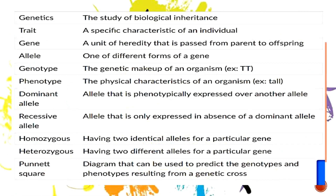Let's unlock some key terms about our topic. Genetics is the study of biological inheritance. Traits are specific characteristics of an individual. Genes are units of heredity passed from parent to offspring. An allele is one of the different forms of a gene. Genotype is the genetic makeup of an organism — for example, two capital letters T. That is our genotype, and we will be discussing more of these as we move on.